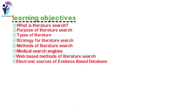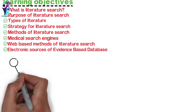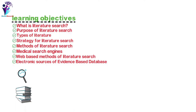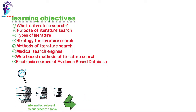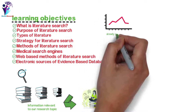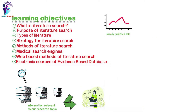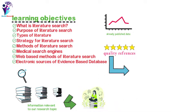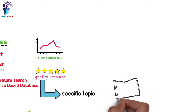Literature search allows us to search in a purposeful and systematic manner through a range of literature or information relevant to our research topic, our particular field, and material relevant to our interest and objectives. Literature search is a systematic and well-organized search from already published data to identify good quality references on a specific topic.